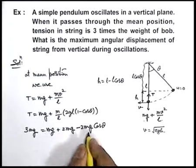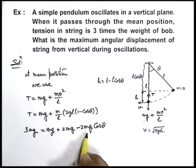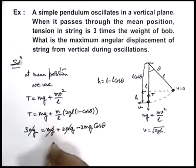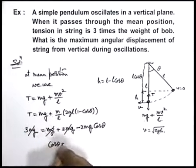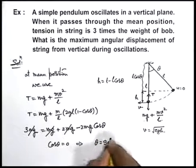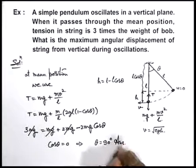From this relation we can see, in this case, this 2 m-g and m-g, 3 m-g gets cancelled out, and we get cos theta is equal to zero. This implies the value of theta is equal to 90 degree, that'll be the answer of this question.